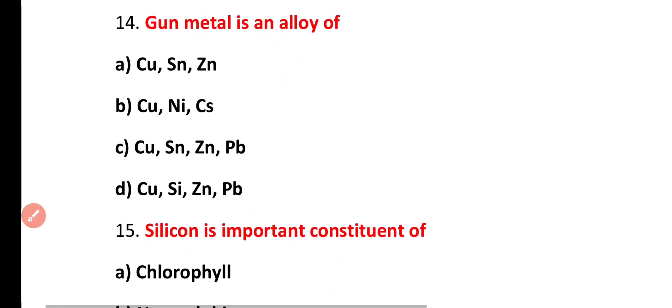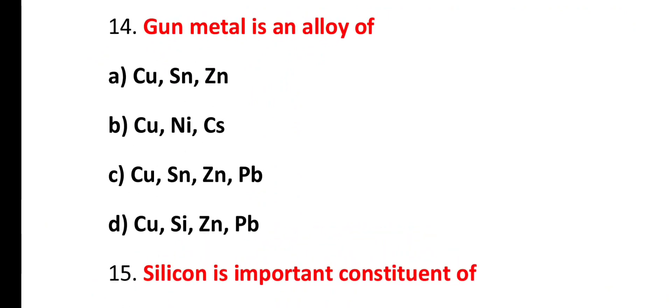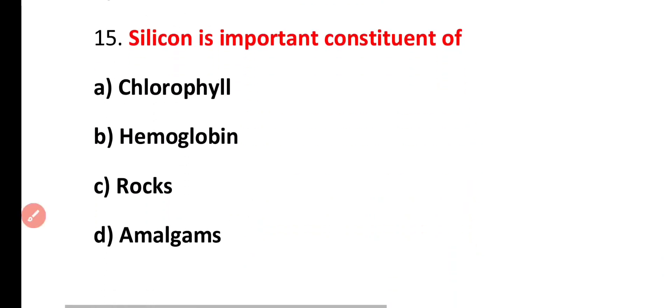Question number 14. Gun metal is an alloy of copper, tin and zinc, copper, nickel and cesium, copper, tin, zinc and lead, copper, silicon, zinc and lead. Correct answer is option A. Gun metal or G metal. It is an alloy of copper, tin as well as zinc.